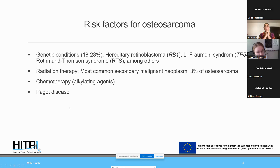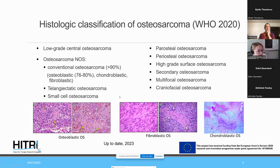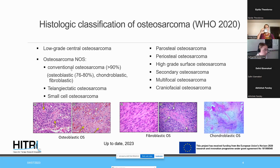Above the age of 65, Paget's disease is one contributing factor. The histologic classification as proposed by the WHO 2020 classification shows that the most common type is conventional osteosarcoma, comprising more than 90% of cases, divided into subgroups: osteoblastic, chondroblastic, and fibroblastic — this is conventional high-grade osteosarcoma.